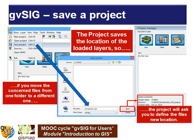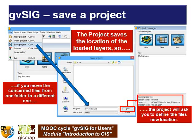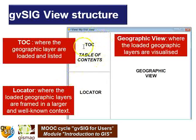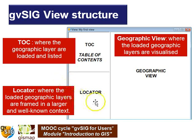First of all, it's a very good idea to save a project in order to reload it at a later moment. From File, Save Project — I'll save it with the name 'Introduction GIS', for example. When you save a project, it also saves the location of the files you uploaded. If you move a file included in the project from one folder to another, the software will ask you to define the new location. Then I open my view by double-clicking or clicking Open. The main elements are: the TOC (table of contents) where geographic layers are listed, the geographic view where layers are visualized, and the locator where layers are framed in a larger, well-known context.